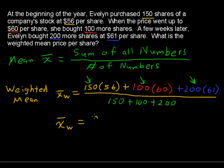It'll be $59.11, rounding to two decimal places. That's the weighted average, so on average that is what Evelyn paid per share.